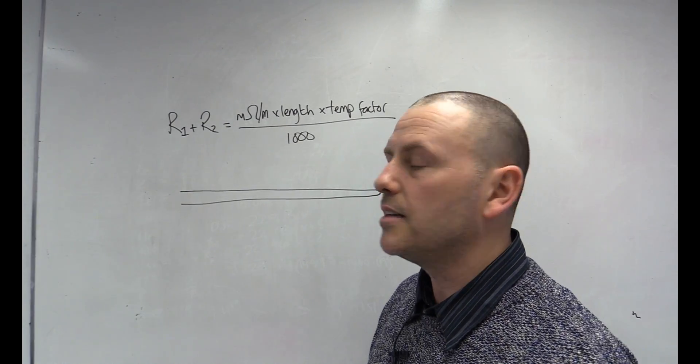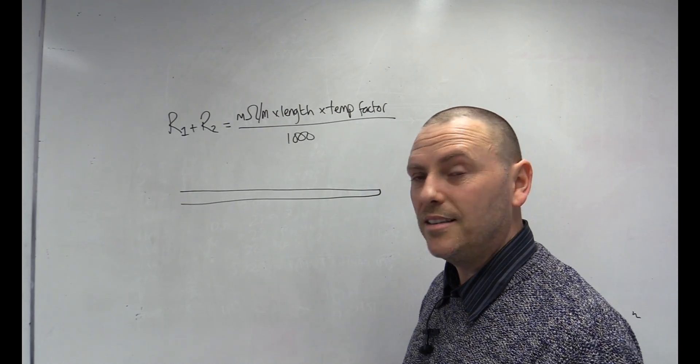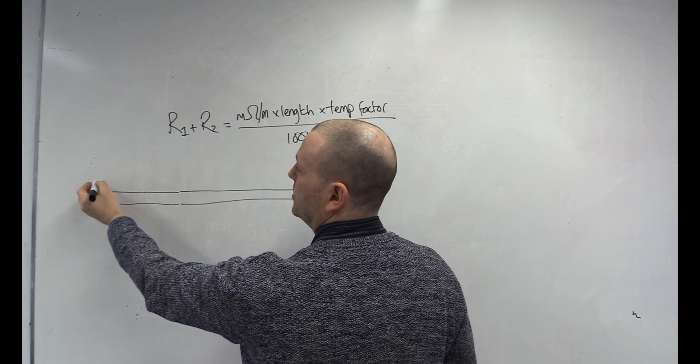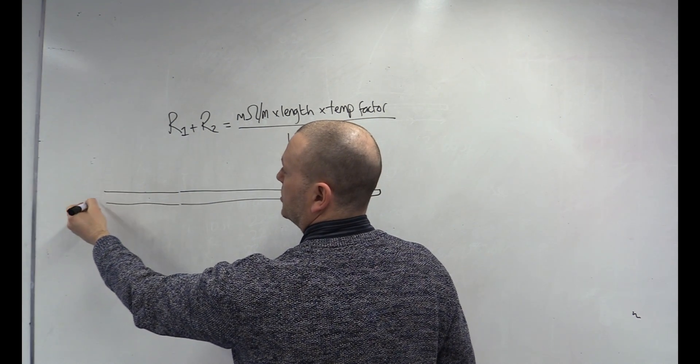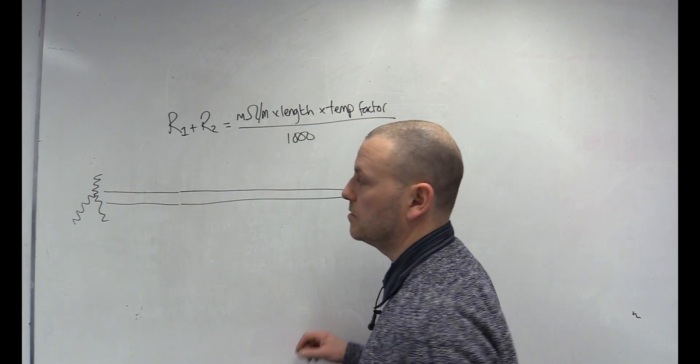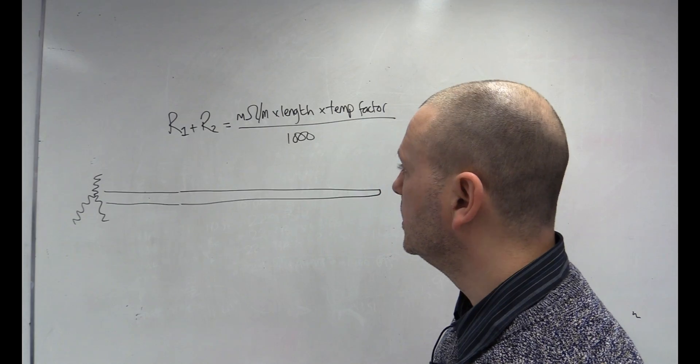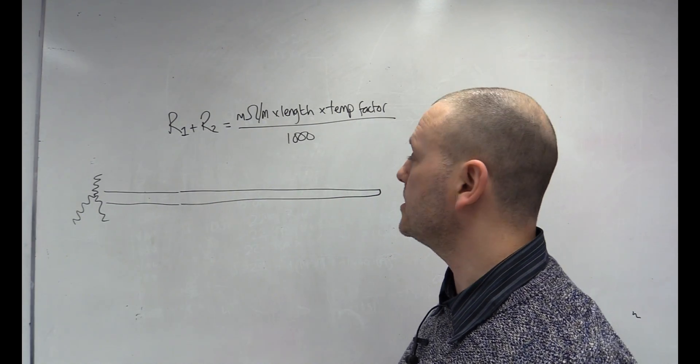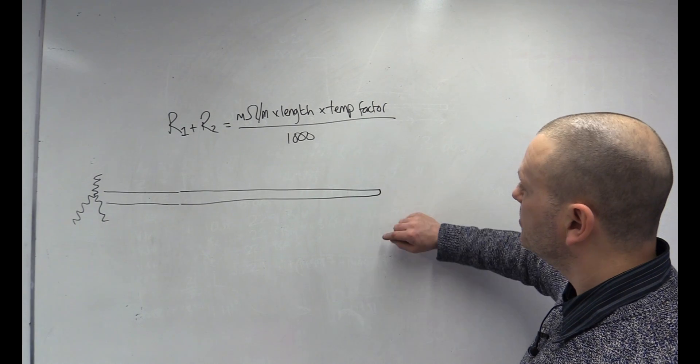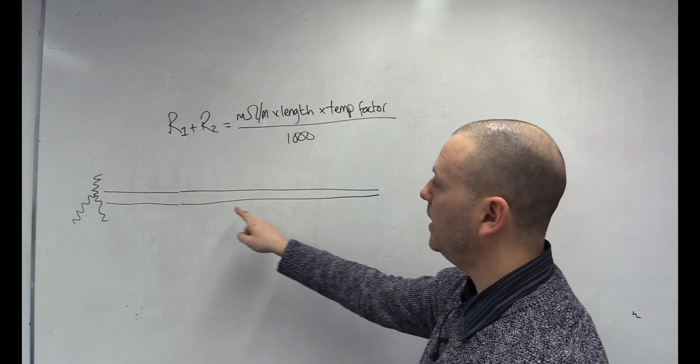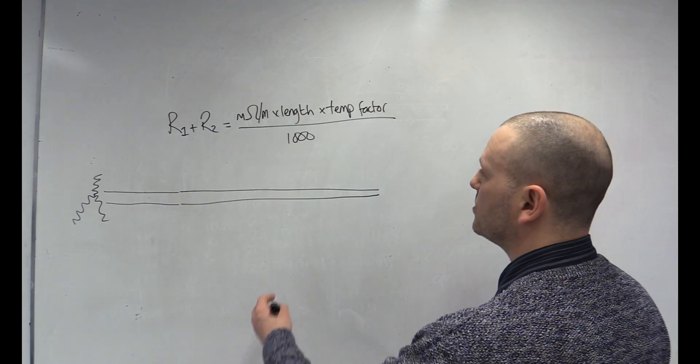Now, why do we need to know that? Well, because what we then do is add on the external part, which is the ZE, back to our substation. That's my drawing of a star winding. And then, once we've got that loop, we can understand how much current is going to flow if these cables touch here, or here.